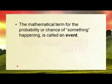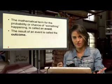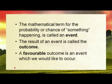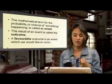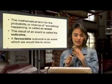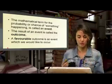The mathematical term for the probability or chance of something happening is called an event. The result of the event is called the outcome. And a favorable outcome is an event which we would like to occur. So: chance of something happening = event; result of the event = outcome; favorable outcome = what we would like to occur.